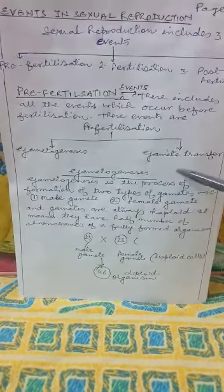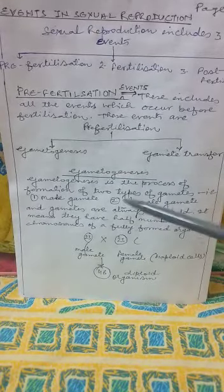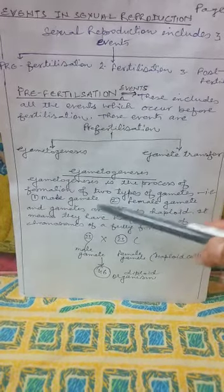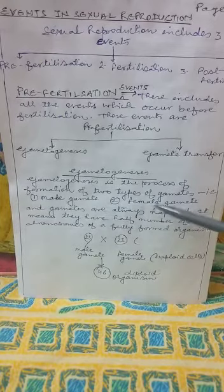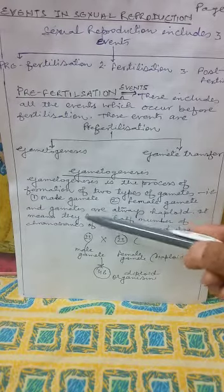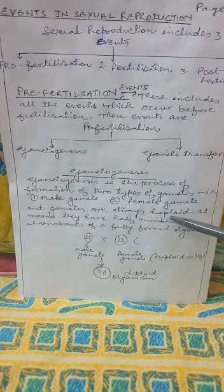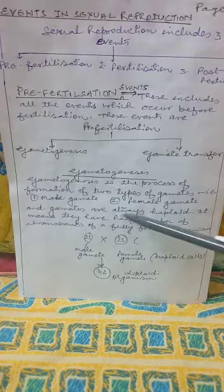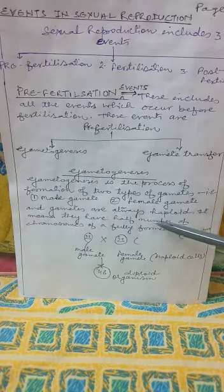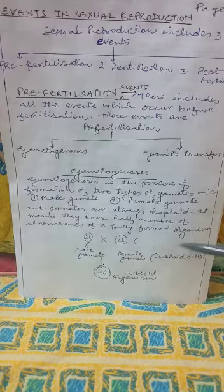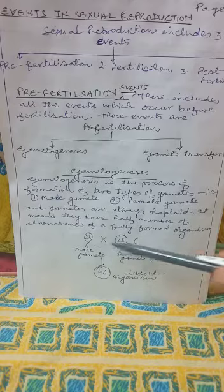The two pre-fertilization events are gametogenesis and gamete transfer. Gametogenesis is the process of formation of two types of gametes — male and female gametes. Gametes are always haploid. This is a very important point you have studied in your previous classes also. Gametes are always haploid, meaning they have half the number of chromosomes of a fully formed organism.